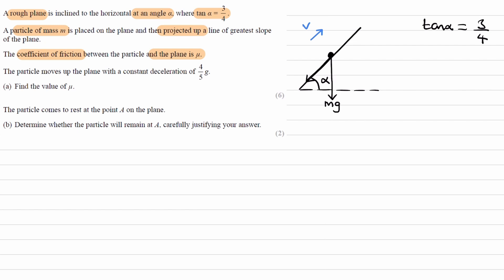Whenever an object is moving, the frictional force is the maximum it can possibly be, which is mu r, where r is the normal reaction force perpendicular to the slope. The particle moves up the plane with a constant deceleration of 4 over 5 g, so it is decelerating and slowing down, with acceleration in the downward direction along the slope of magnitude 4 over 5 g.